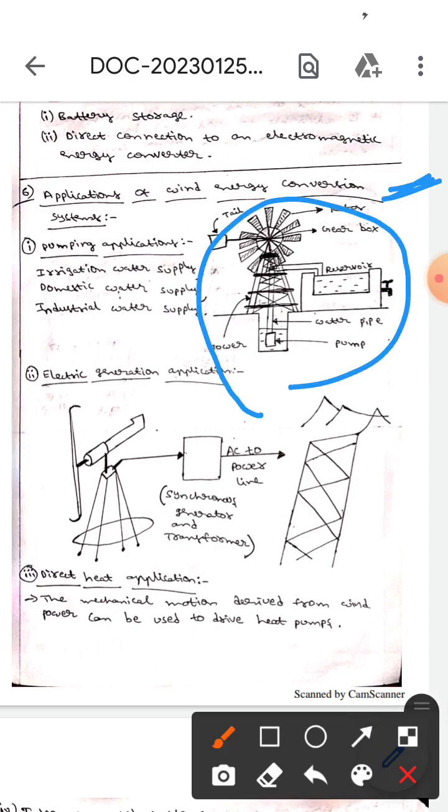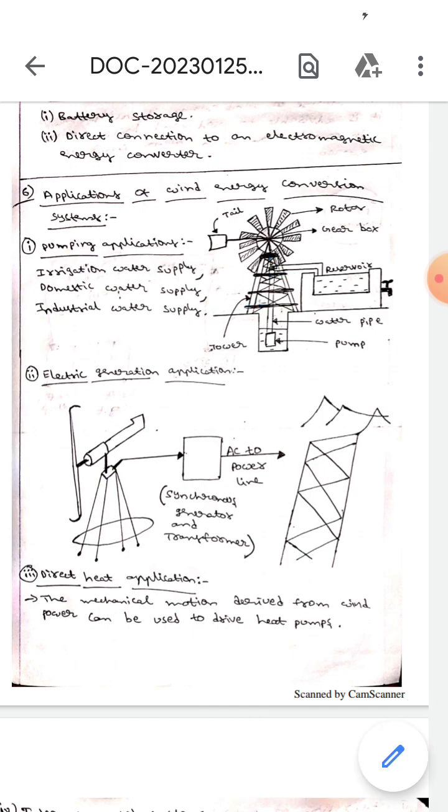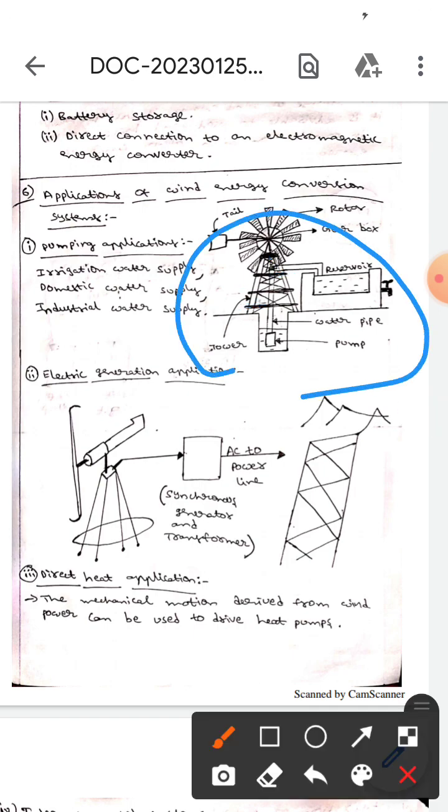The first one is pumping applications. Here this pumping application is used for irrigation water supply, domestic water supply, or industrial water supply. This diagram represents the pumping application.